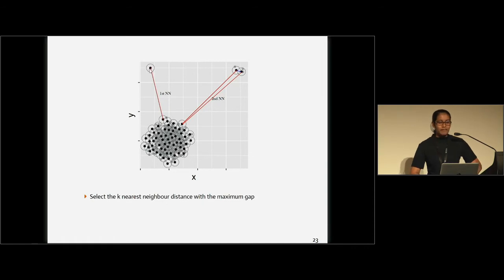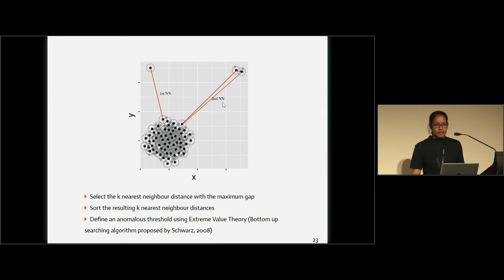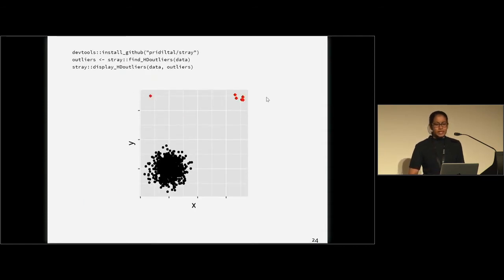For example, here we have an isolated point, so the k-nearest-neighbor distance with the maximum gap is my first nearest neighbor distance. But for these two, the second nearest neighbor distance gives me the maximum gap. Once I get that information, I sort the resulting k-nearest-neighbor distances, and then again using extreme value theory I identify an anomalous threshold. After identifying that anomalous threshold, I can detect these points as anomalies. One important advantage of this algorithm is that we can identify both isolated anomalies and also anomalous clusters of points.